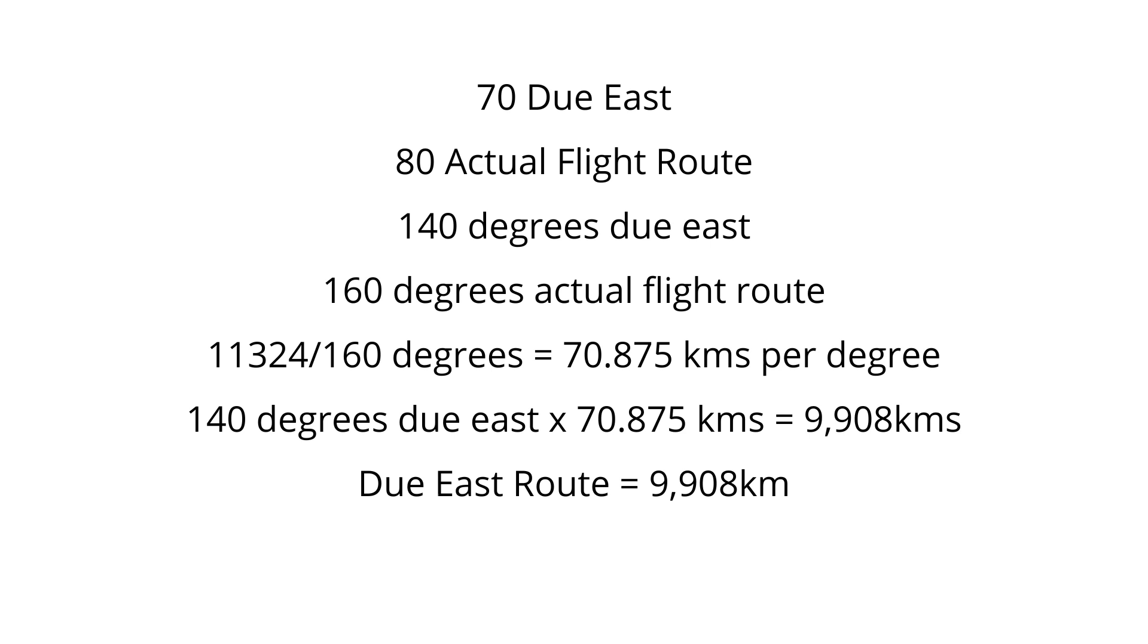So remember, it's 140 degrees if the plane goes due east. You'll measure 160 for the actual flight route dipping down to Antarctica. So 70 units relating to the 140, 80 units relating to 160. So if the degrees is 140 difference, then for the flight route dipping down, they've travelled 160 degrees. If you divide the flight distance of 11,324 by the 160 degrees, it gives an average of 70.875 kilometres per degree.